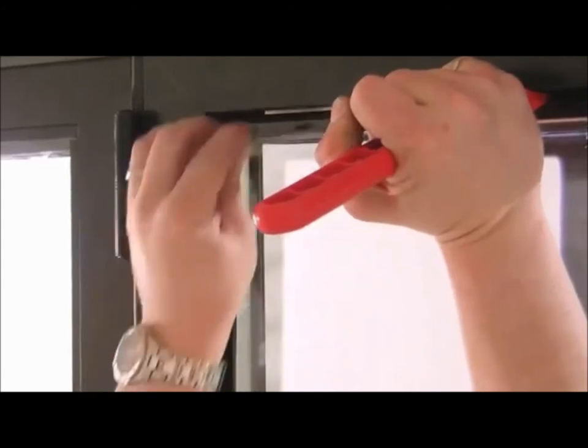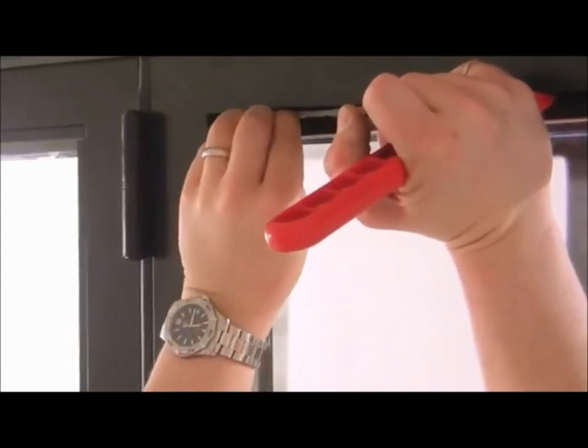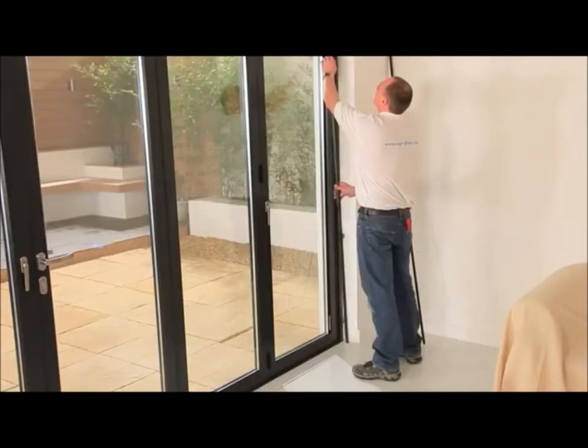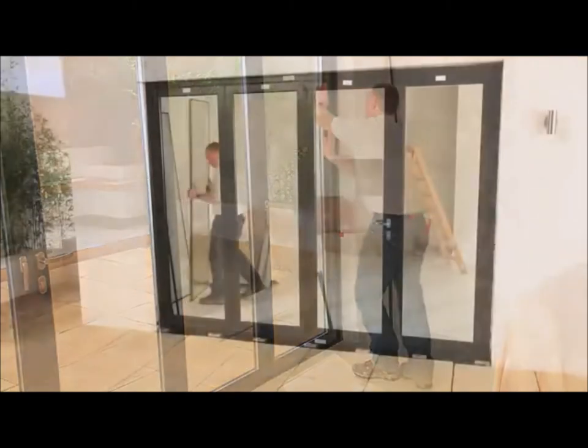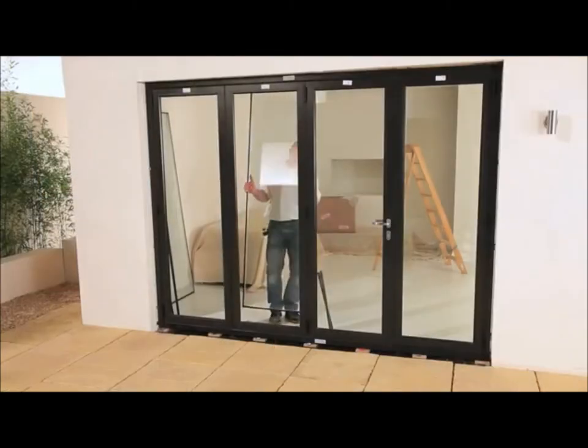Be sure that the top packer is between the automatic toe and heel plate and the glass. Once all packers are in position, reinstall the glazing beads and repeat steps for all remaining doors.